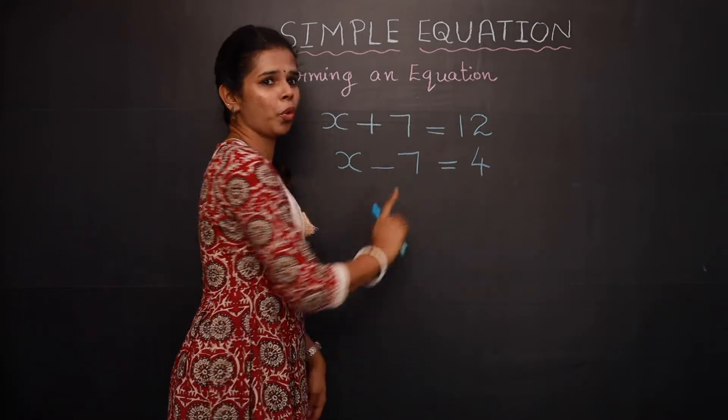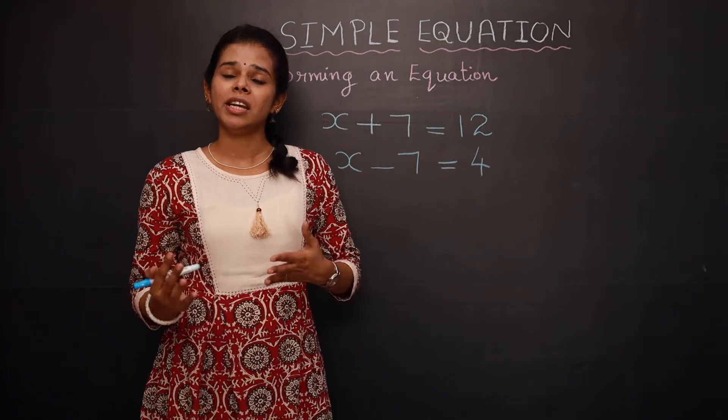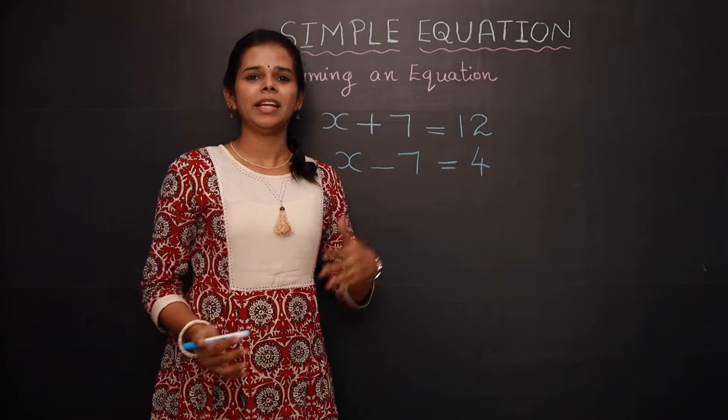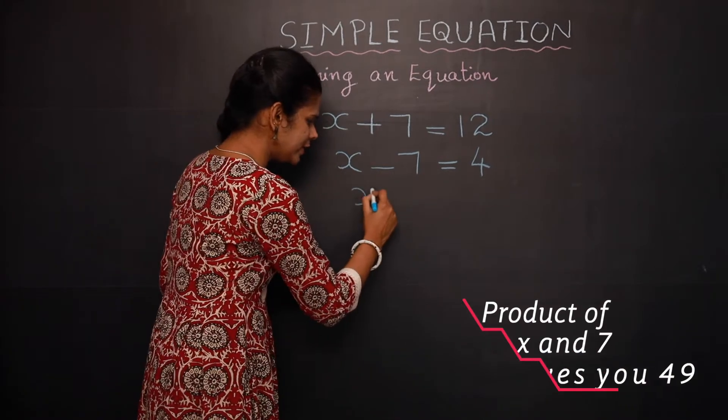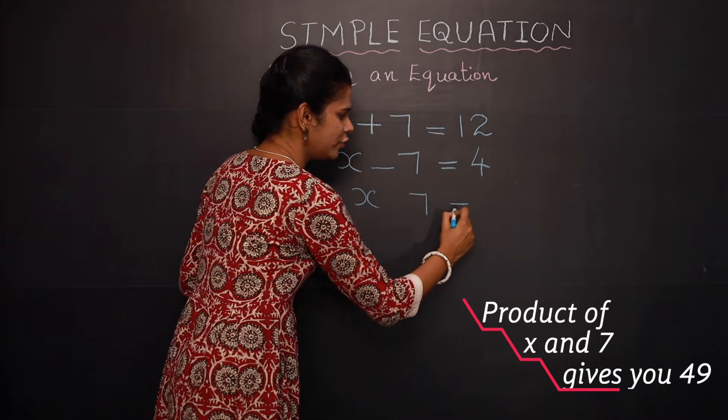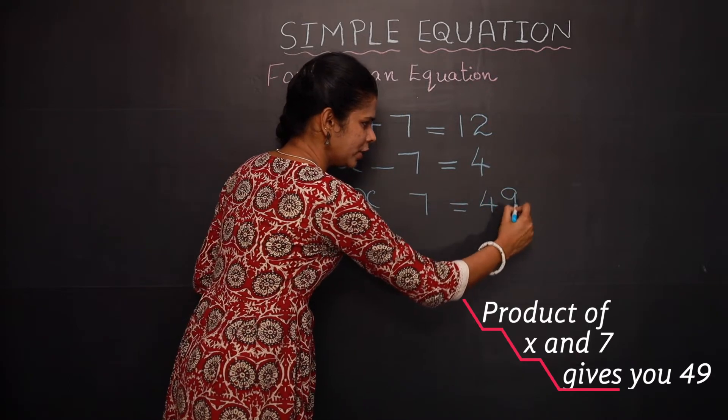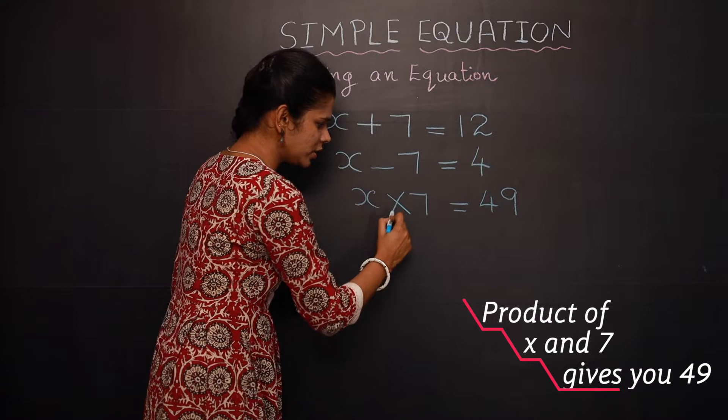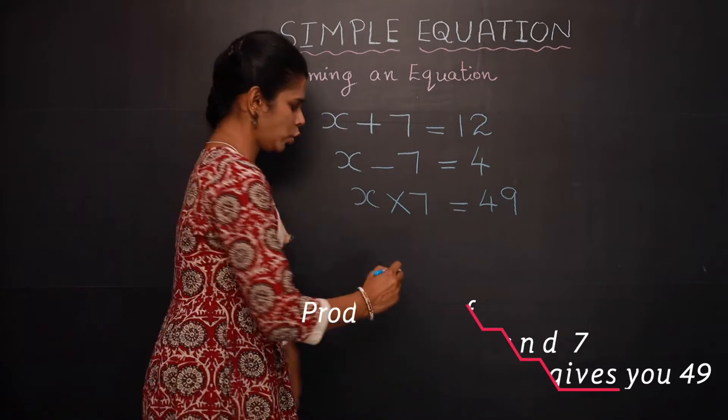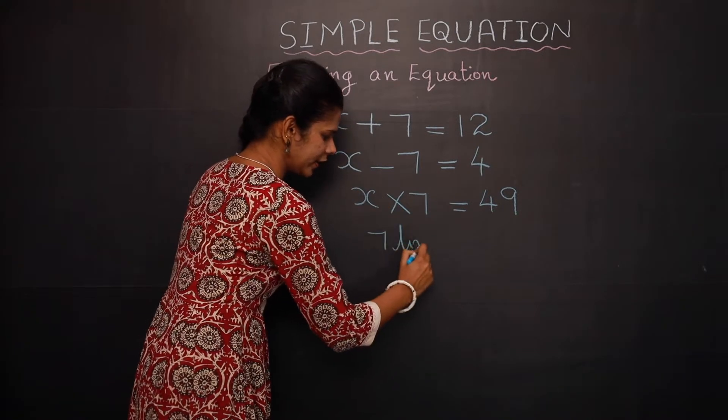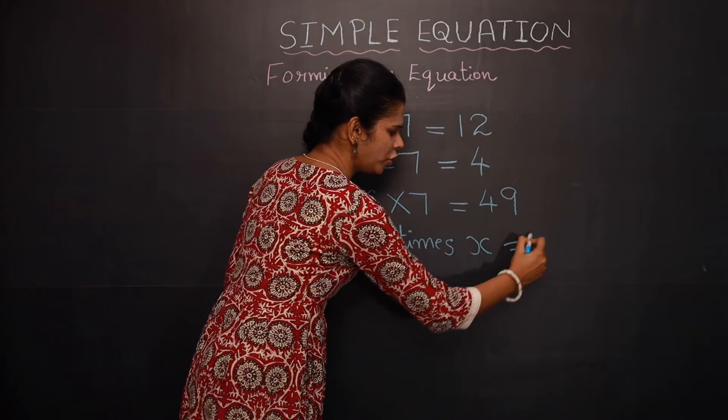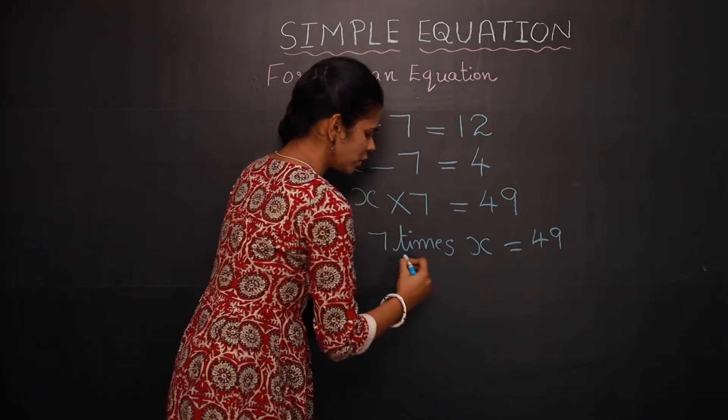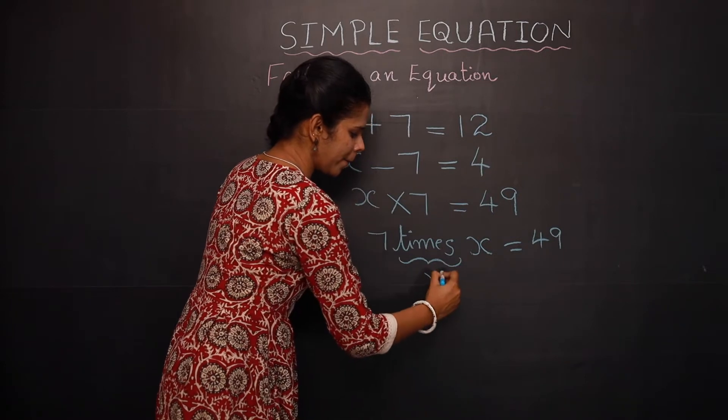The product of x and 7 gives you 49, so here product means it is multiplication. So 7 times x gives you 49. Times also indicates multiplication.